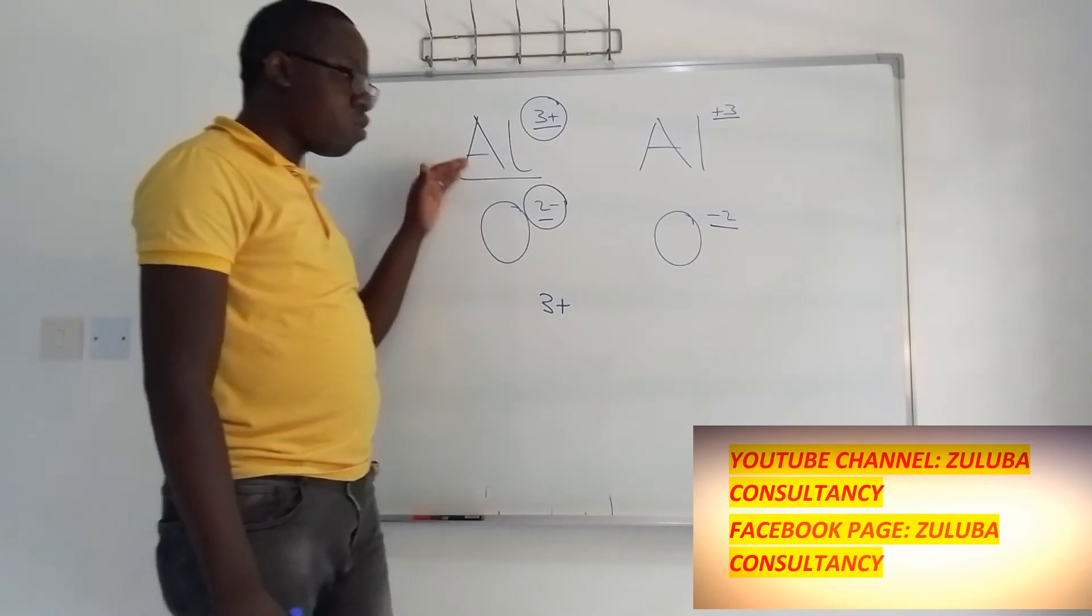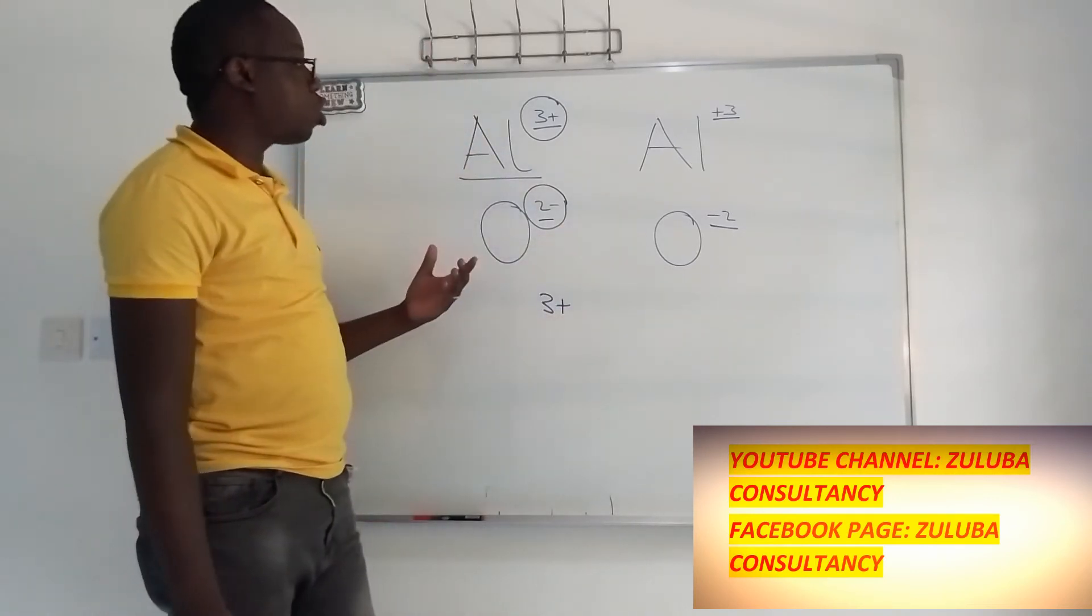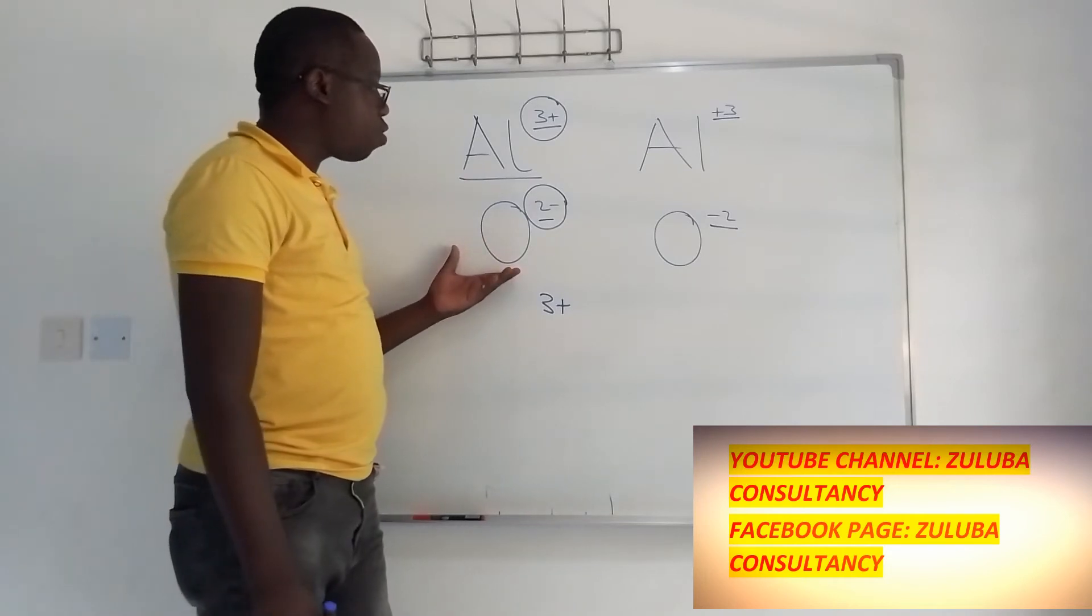While when an atom gains electrons it becomes a negative ion. This positive ion we call it a cation, while the negative ion we call it the anion.